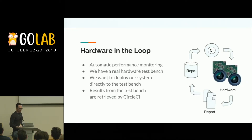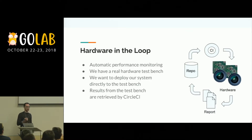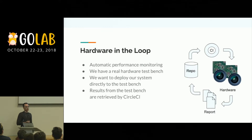We went further by setting up a continuous integration system where CircleCI deploys our software to the real hardware, runs it on a test bench in our office, and extracts performance metrics. This is useful because correctness from unit tests is important, but we also want to ensure that a pull request won't degrade the performance of our system — otherwise we could commit something to the master branch and the system would stop working without knowing why.